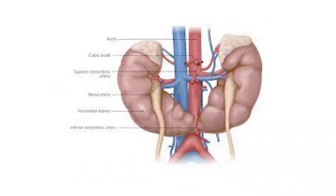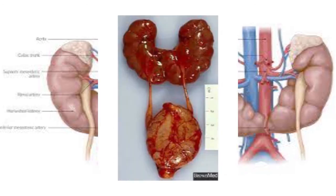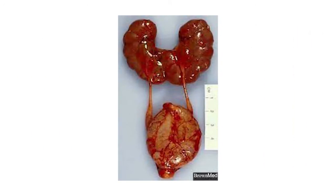Here is a good image of the horseshoe kidney. The lower poles of both kidneys are clearly seen to be fused. This is the actual picture of the horseshoe-shaped kidney. The entire renal system is seen with both ureters and the bladder clearly visible.